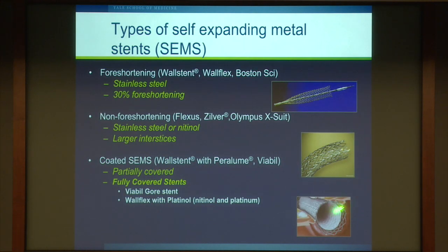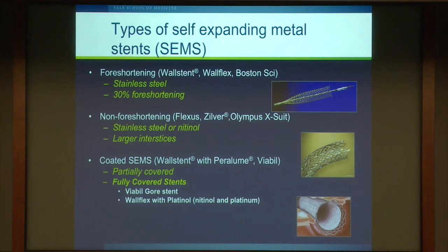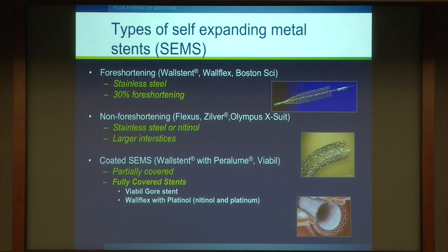We now tend to use metal expandable stents for a variety of reasons: lesser occlusion, longer patency, and less cholangitis. There are covered and uncovered varieties. These stents are held constrained in a membrane and then expand on deployment. They are typically 10 millimeters or 30 French in diameter, compared to plastic stents at 3 millimeters or 10 French — three times the diameter. In malignant obstruction, metal stents last about seven to nine months before needing revision, compared to about two and a half months for plastic stents.